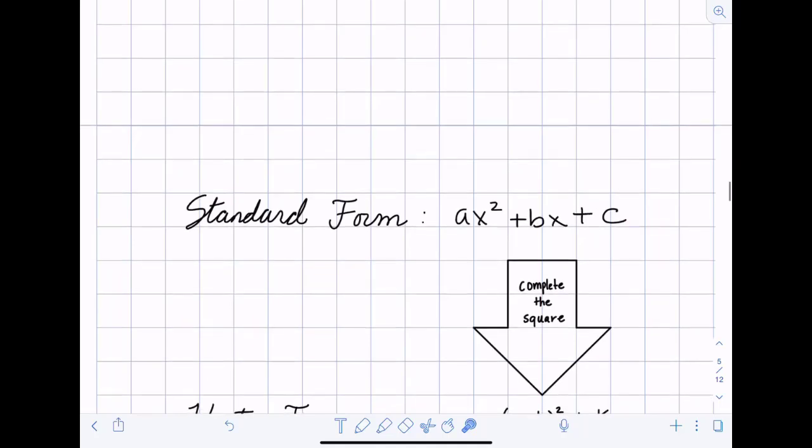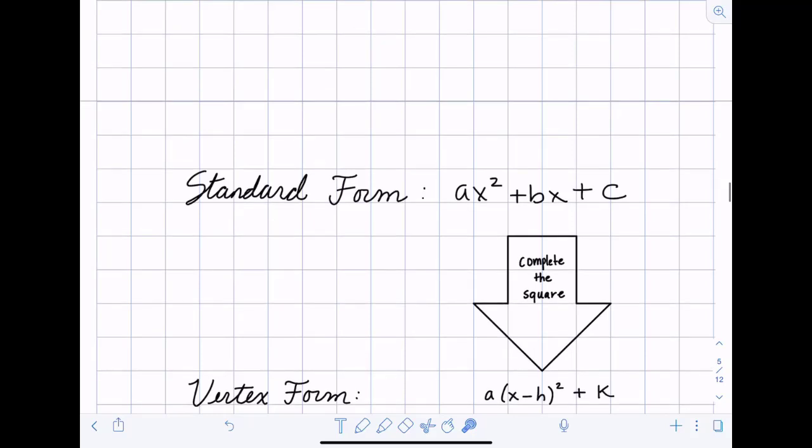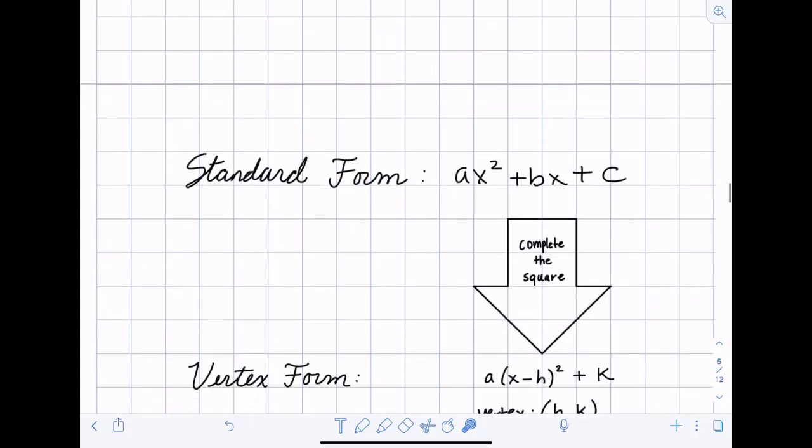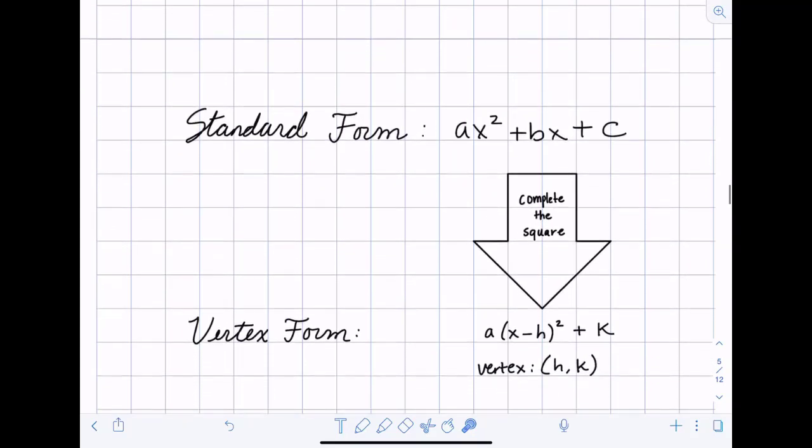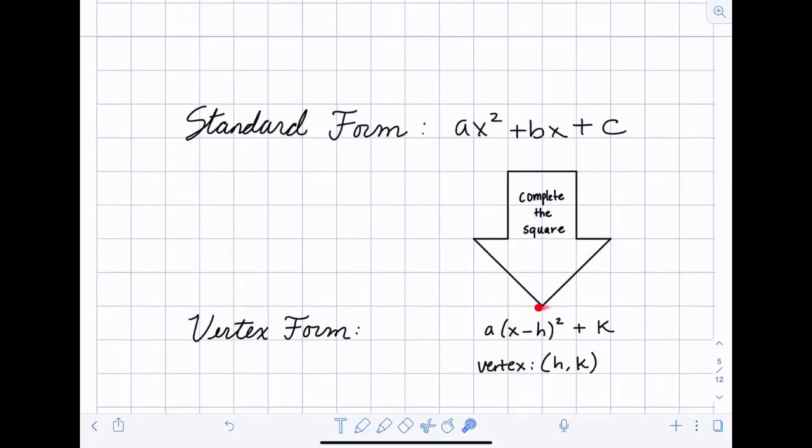And when we do what's called completing the square we'd be taking something that's a standard form quadratic and we'd be completing the square to turn it into something that is like a times x minus h squared plus k and we would call this a square because we have our square term here and we're just adding a constant.